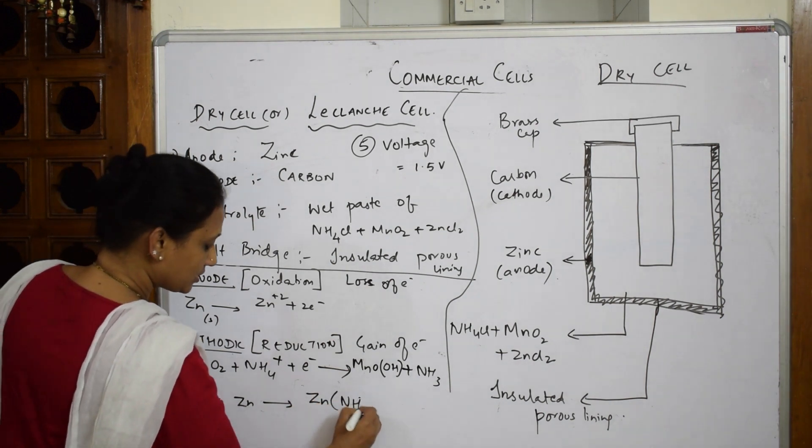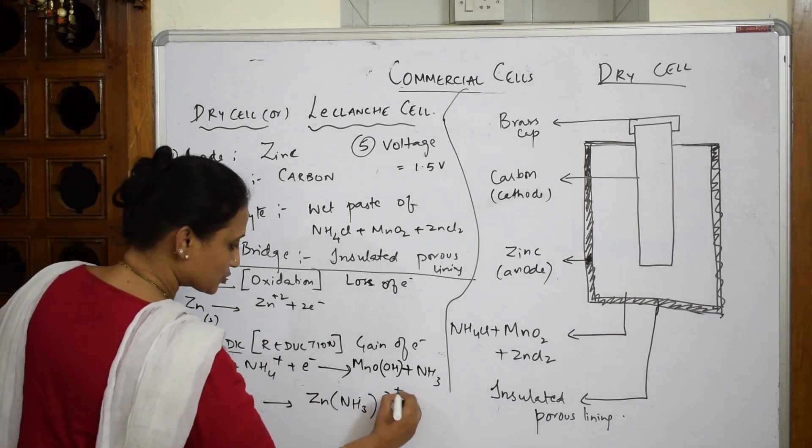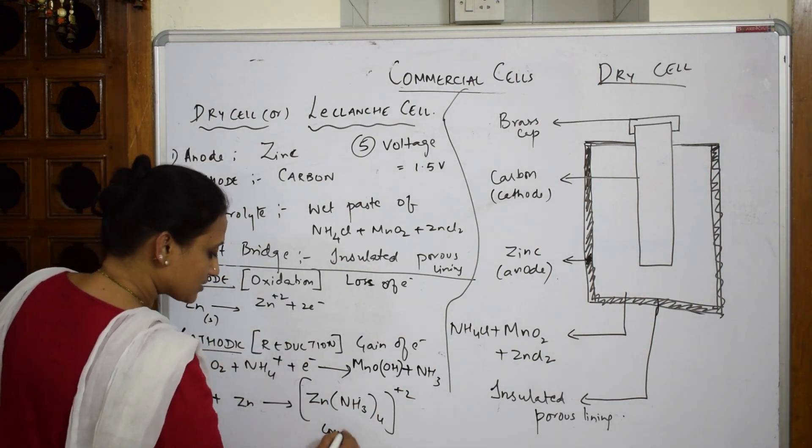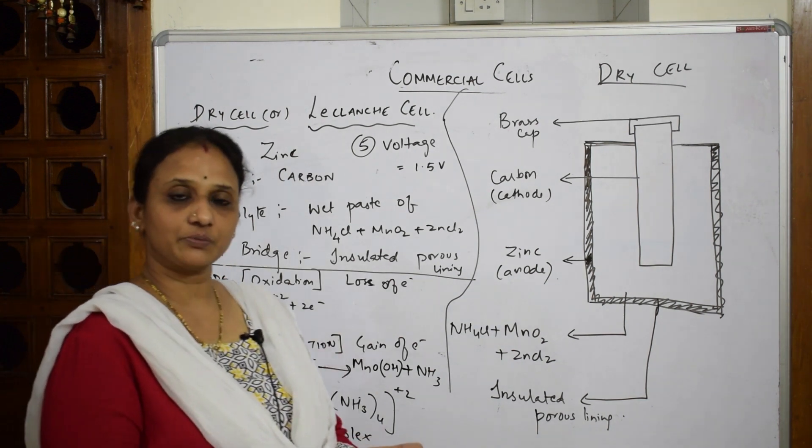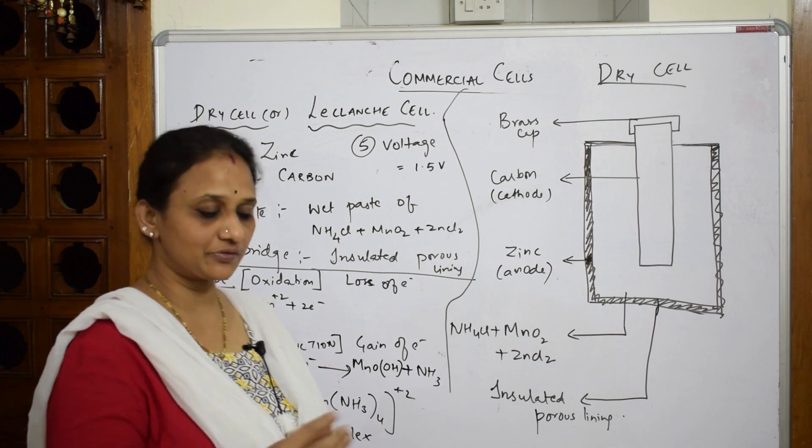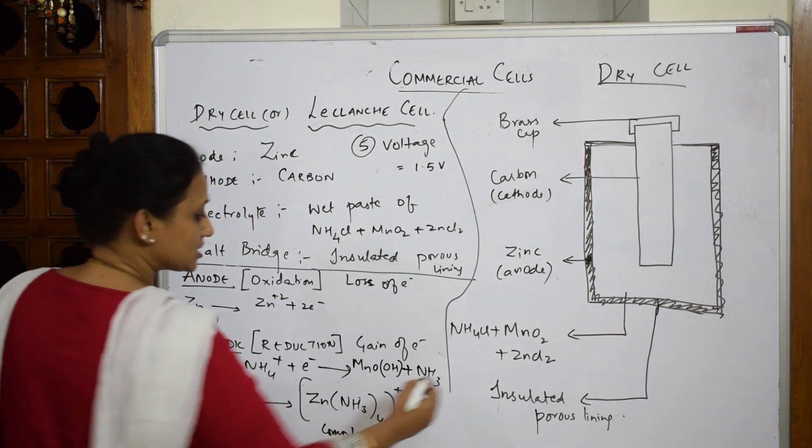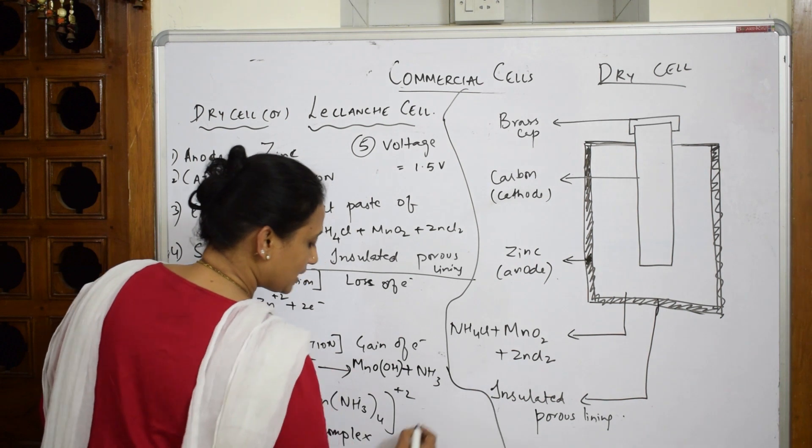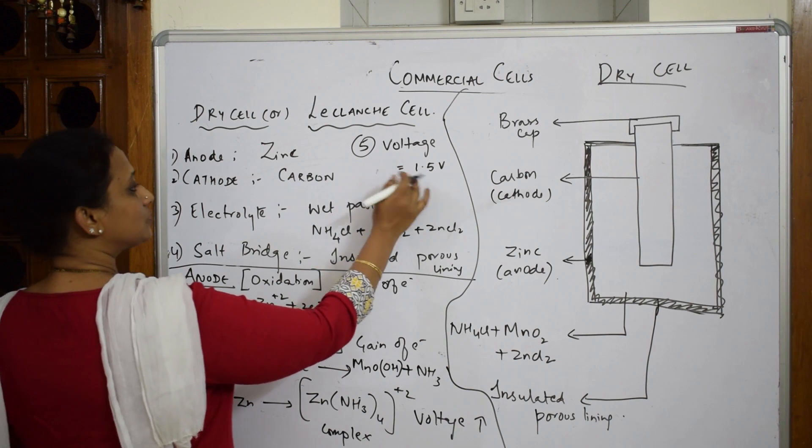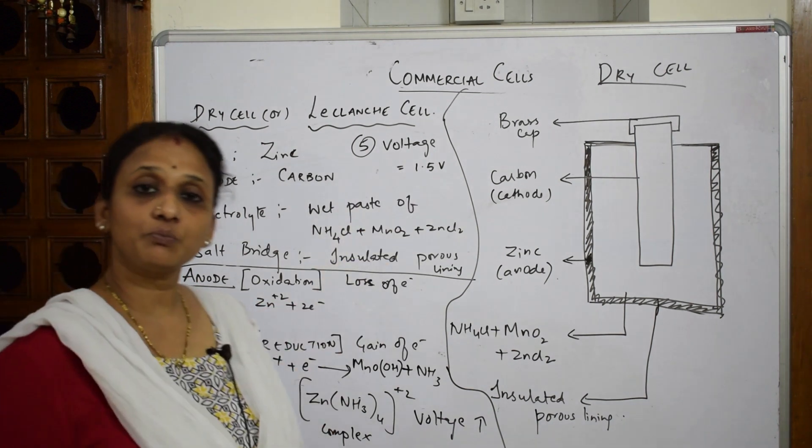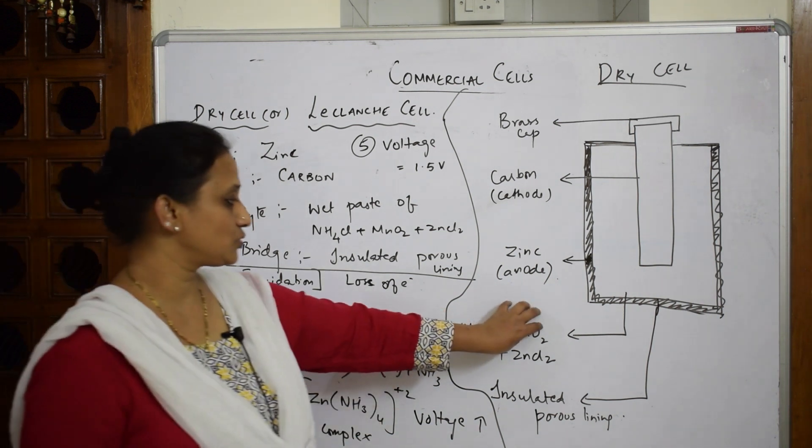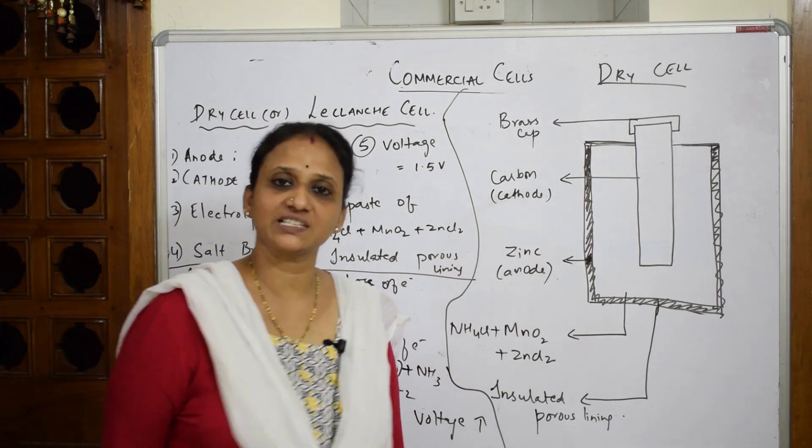This has formed a complex. Because of this complex formation, the amount of zinc present around it has become less because everything is complexed inside. Because of this, immediately the voltage increases. How much is the voltage? The voltage of Daniell cell is 1.5 volts. Let's come back and see what is the role of MnO2, why is it actually called dry cell.